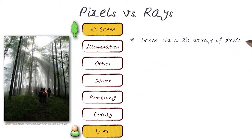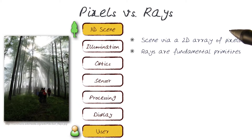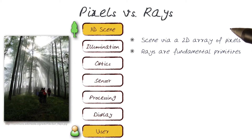We've talked previously about the concept that an image is a 2D array of pixels, and that's how we capture a 3D scene into a 2D image. But we want to remember that the fundamental primitives, at least in the analysis of computational photography, are rays.